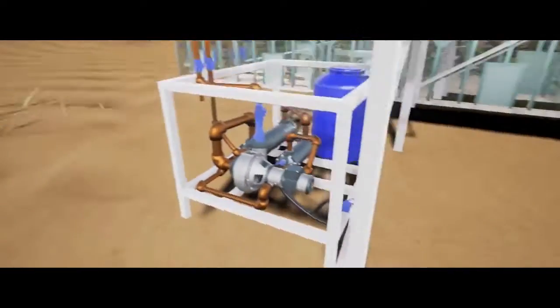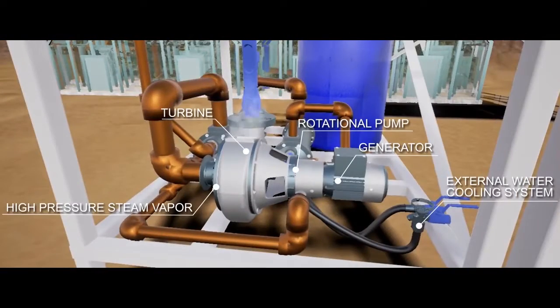The fluid transfers the heat to a patent-pending storage system. From there, we use organic Rankine cycle for low-grade waste heat recovery to convert the stored energy into electric power.